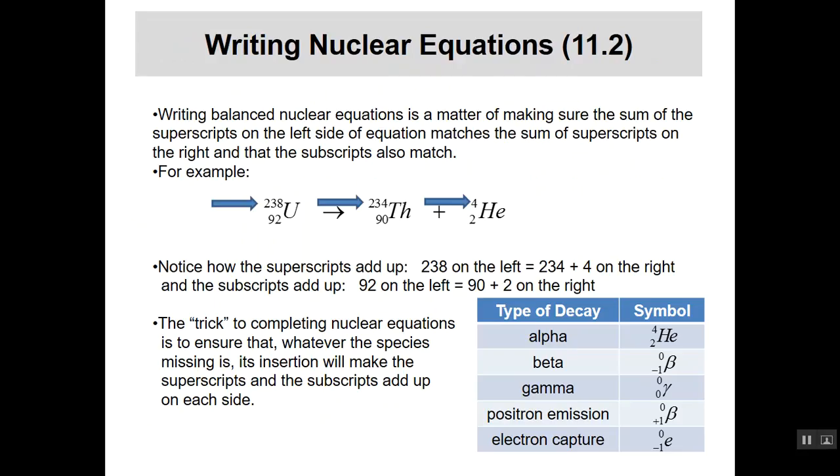If I look at the subscripts there, what do I see? Well, uranium is 92, and on the right-hand side I have 90 for thorium, and I've got a 2 for helium, so it adds up to 92. All I have to do is make sure the superscripts add up the same on both sides, and the subscripts add up the same on both sides. If there's anything tricky about this, which, by the way, there's not, but if there were anything tricky about this, it's what if you have a missing species and you want to figure out what it is? That sounds like fun, doesn't it? So let's try that.